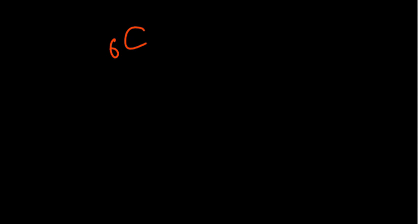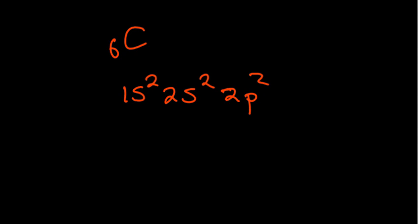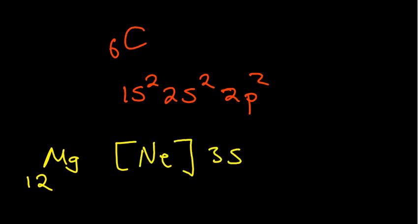We have a very interesting discussion about orbitals, and then we'll look at how we basically get to give electronic configuration using the orbitals. For example, carbon has six electrons in its neutral state, so the electron configuration covers all that. Magnesium, which has 12 electrons, can also be represented using the noble gas — that's another way of giving an electron configuration.